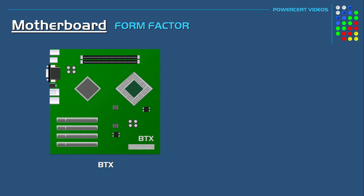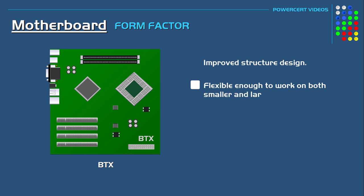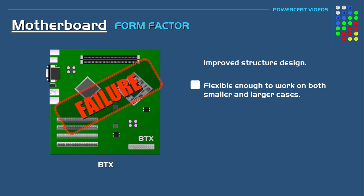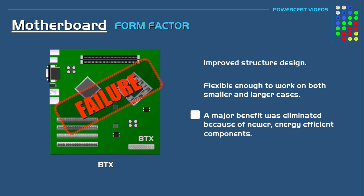Another improvement is the structure design, which is flexible enough to work on both smaller and larger tower cases. However, even though the BTX was supposed to succeed the ATX, it never did. This was largely due to components such as newer CPUs and chipsets becoming more energy efficient, which required less power and resulted in reducing heat. So a major benefit of BTX boards — cooling — was eliminated because of these newer components running cooler.